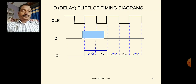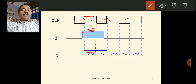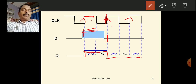In the timing diagram of the D flip-flop (positive edge triggering): D is made 1 at a certain point, and at the positive clock edge, since D=1, Q becomes 1 and remains 1 until the next edge. At the next positive edge, D=0, so Q becomes 0. The flip-flop is activated only at positive edges — Q follows D at each positive clock edge.